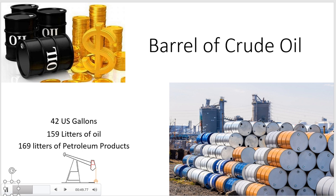A barrel of crude oil produces about 169 liters of various petroleum products. The percentage of petroleum products produced from a barrel of oil varies according to the refining operations. The petroleum products from refining one barrel, or 159 liters, of crude oil are as follows: Naphtha 38 liters, Aviation fuel 14.80 liters, Gasoline 73.25 liters, Liquefied gas 6.51 liters, Heavy fuel oil 6.35 liters, Other products 25.73 liters, Distillation residues 4.7 liters.